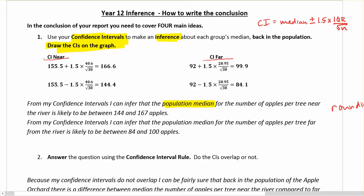From my confidence intervals I can infer that the population median for the number of apples per tree far from the river is likely to be between 84 and 100 apples. I've got my units, I've got my confidence intervals there. The hugely important word for us here is that likely thing. Make sure you really remember to use that word likely when you do your inference, because we're not 100% certain but we're fairly sure. We have some uncertainty here and you have to get that word in there.